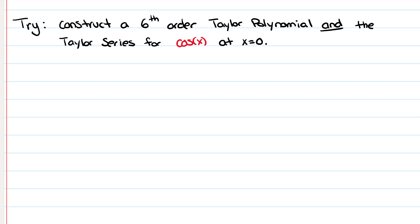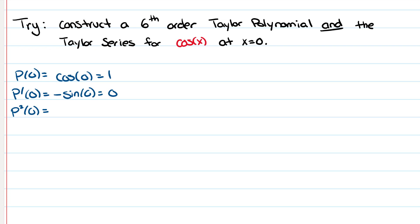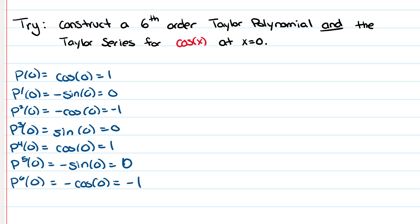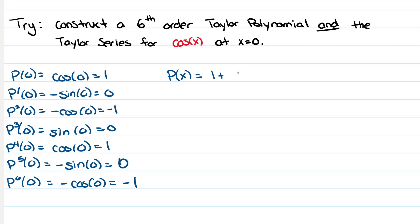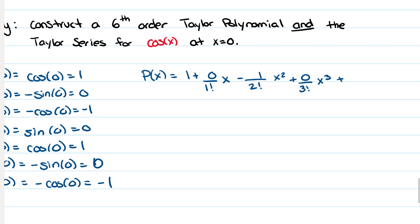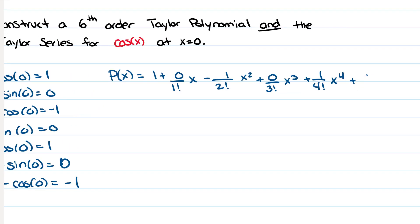After taking the derivatives and plugging in zero, I get P(0) = 1, first derivative = 0, second derivative = −1, and the pattern continues. The next step is to write out all the terms: P(x) = 1 + 0/(1!) · x − 1/(2!) · x² + 0/(3!) · x³ + 1/(4!) · x⁴ + 0/(5!) · x⁵ − 1/(6!) · x⁶.